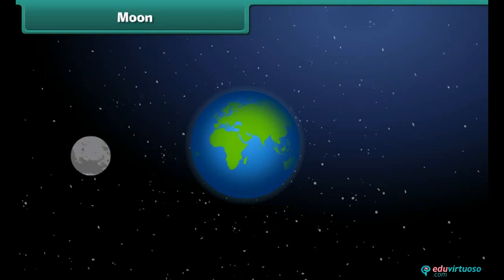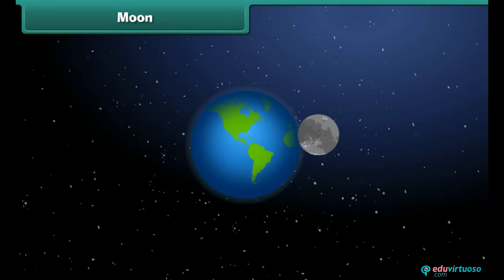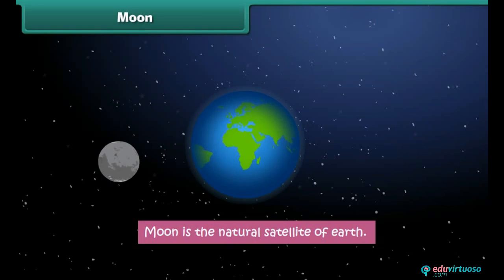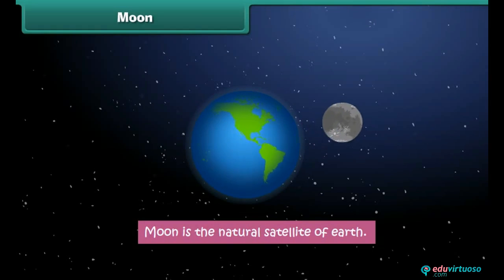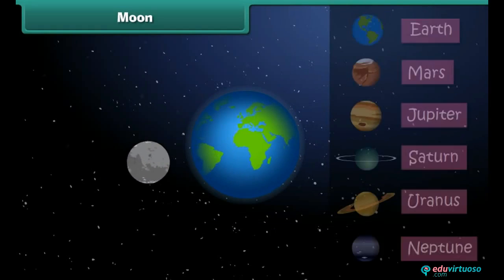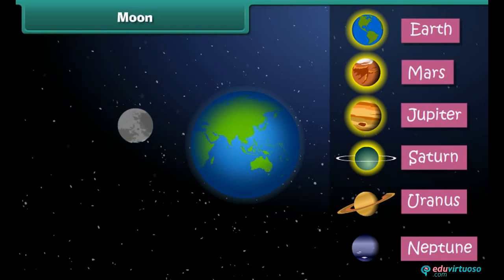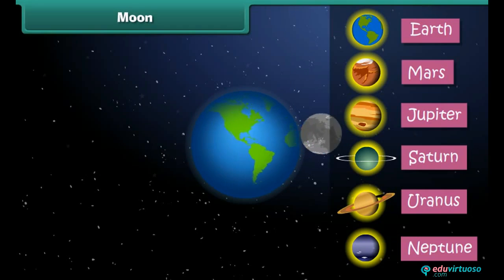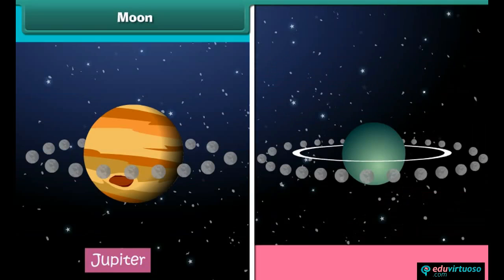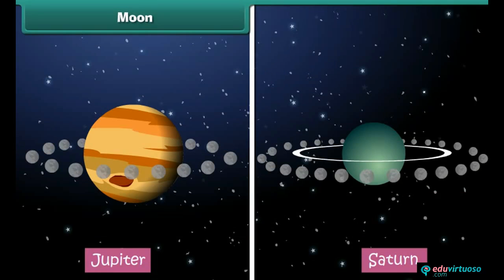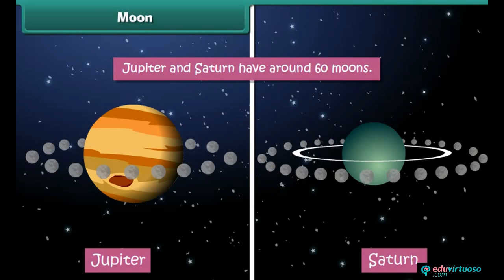A natural satellite is a celestial object that revolves around a planet. It is natural and not man-made. The Moon is the natural satellite of Earth and revolves around it. Apart from Earth, Mars, Jupiter, Saturn, Uranus, and Neptune are other planets that have moons. While Earth has only one moon, all other planets have more than one — Jupiter and Saturn have around 60 moons each.